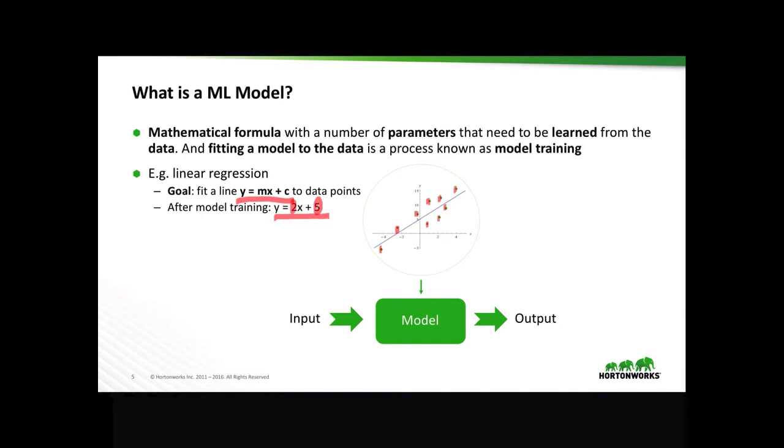And now, say we have a set of inputs, and we want to predict the outputs. So once we export our model somewhere, and say we have a set of incoming inputs, 1, negative 2, 0, 3, 5, and so forth. We want to determine what the output is. And our model is 2x plus 5. So say we substitute 1 for x, we're going to have 2 plus 5, which is 7. And if we continue on, we're going to have 1, 5, 11, 15, and so forth.